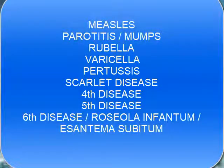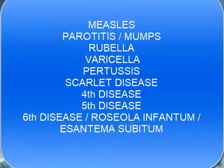The first one is measles. Measles is caused by measles virus that belongs to the Paramyxoviridae family. Then there is parotitis, also called mumps, caused by parotitis virus, which also belongs to the Paramyxoviridae family.